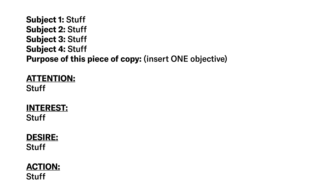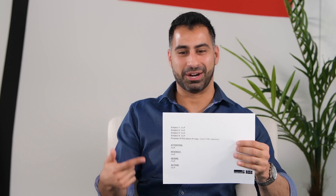With this formula, I type in subject lines and the purpose of the email — what is the one thing we're trying to do? Then I write out Attention, Interest, Desire, Action in this format with placeholder text. This is actually what I do. I have a template that I just copy from each time. And if you want an example of how this works, I'll show you.